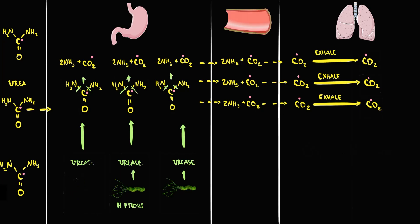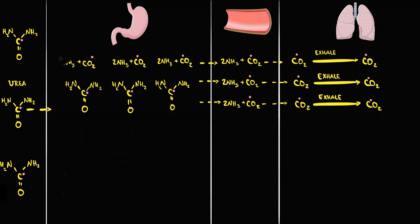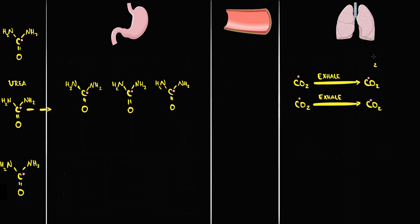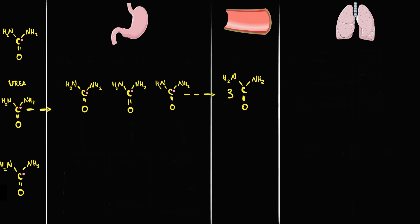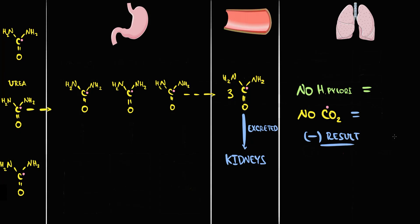If Helicobacter pylori is absent, there will be no urease enzyme. Without urease, there will be no hydrolysis of the urea molecules, so urea molecules remain untouched. As a result, ammonia and carbon dioxide are not produced, so there will be no radiolabeled carbon dioxide in the breath. Instead, the untouched urea molecules are absorbed into the blood and then excreted by the kidneys into the urine. So without Helicobacter pylori, radiolabeled carbon dioxide is not produced, and its absence in the breath is considered a negative result of the breath test — which means you are perfectly fine.